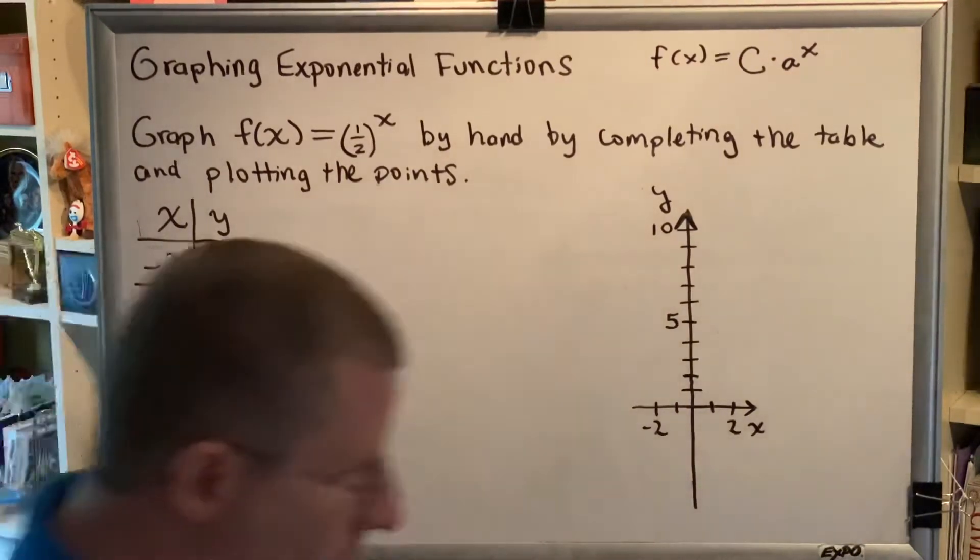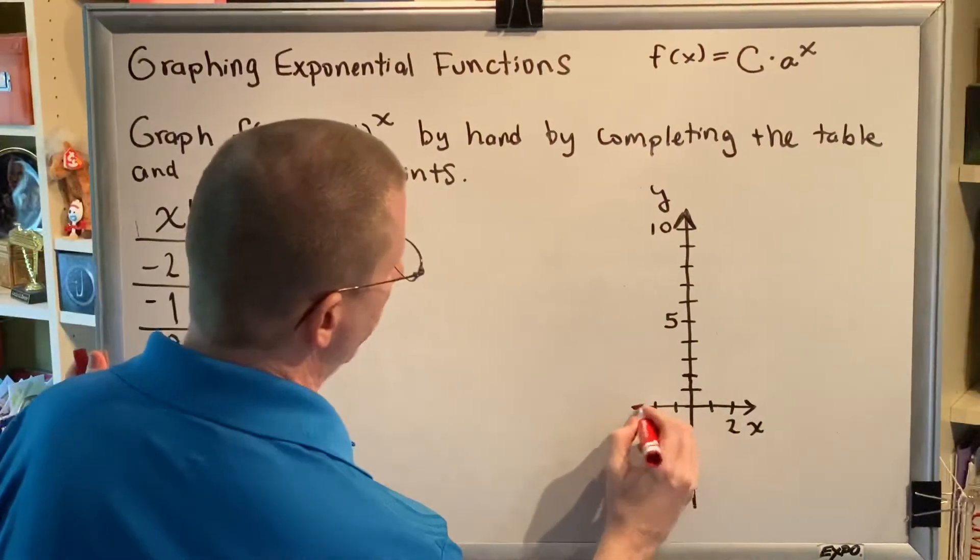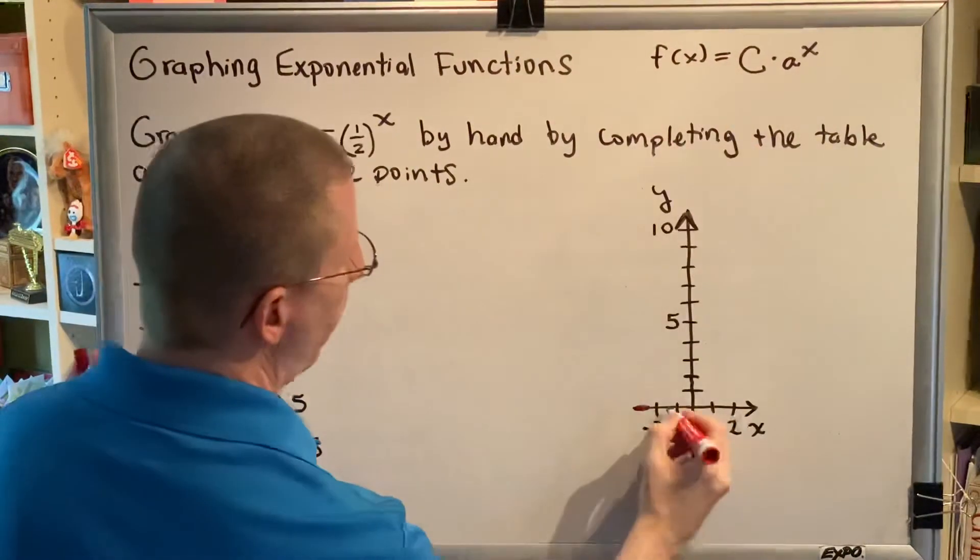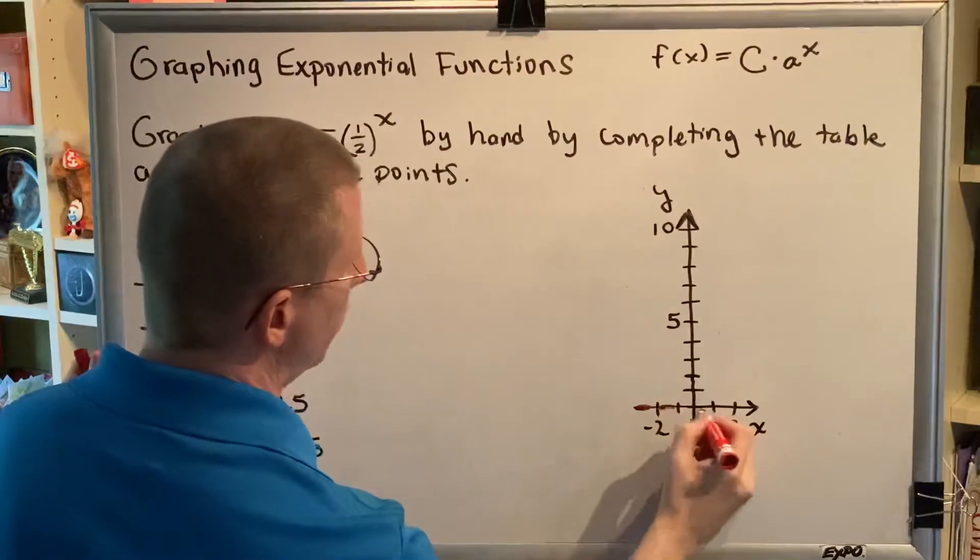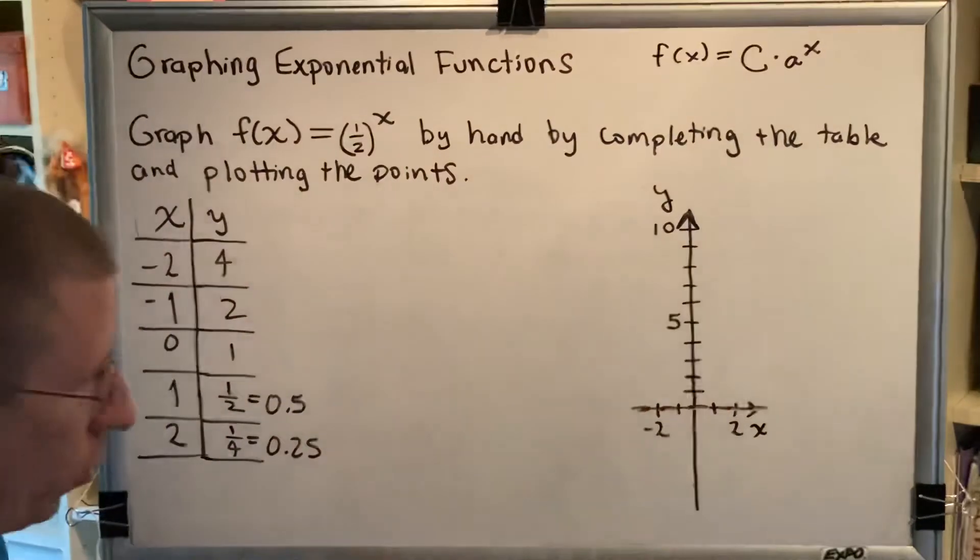And then let's plot our points. First of all, this is an exponential function, and all exponential functions of this form, f(x) = C·a^x, have a horizontal asymptote sitting on top of the x-axis. So we'll draw that.